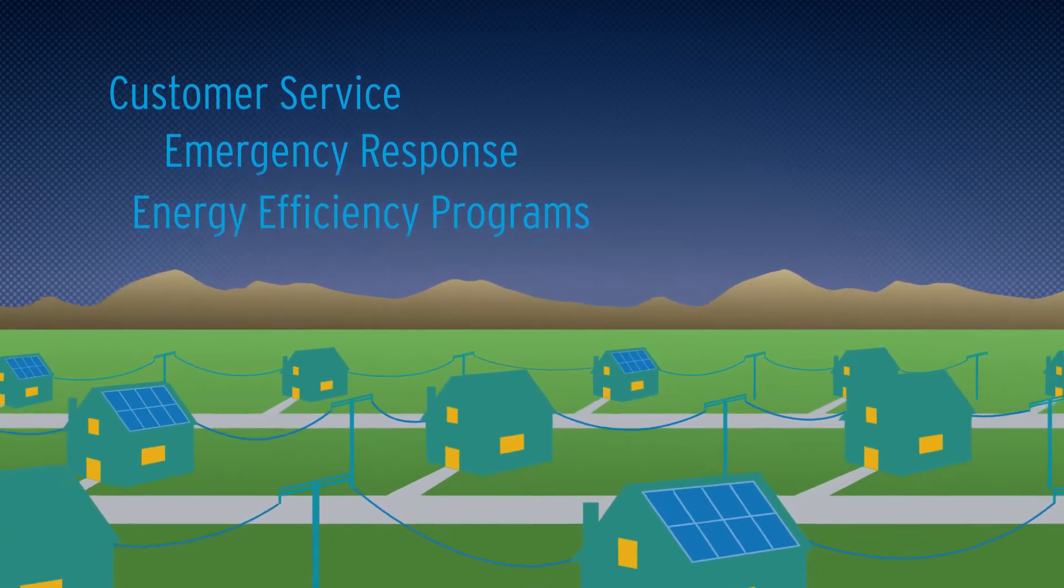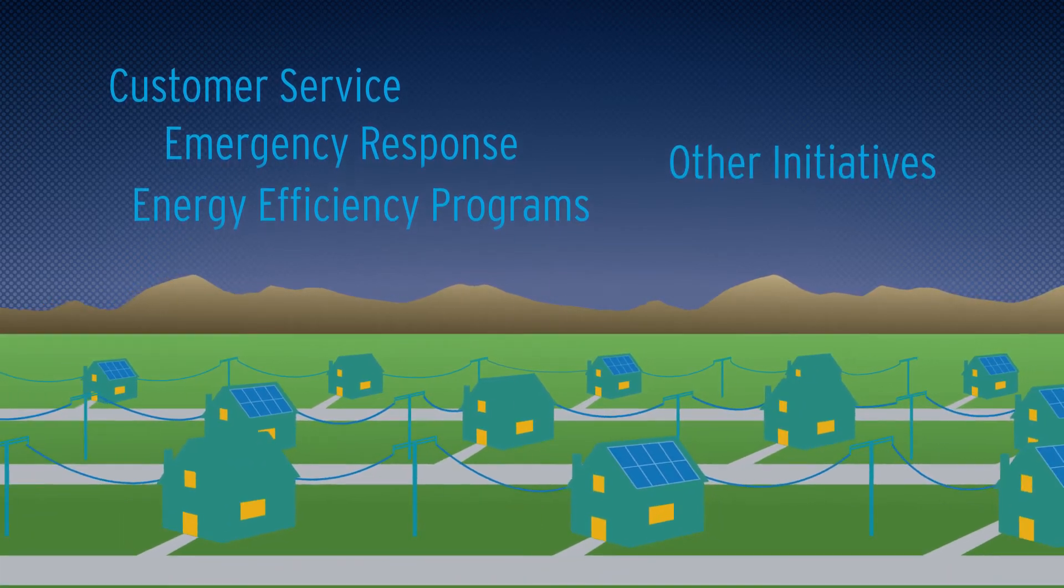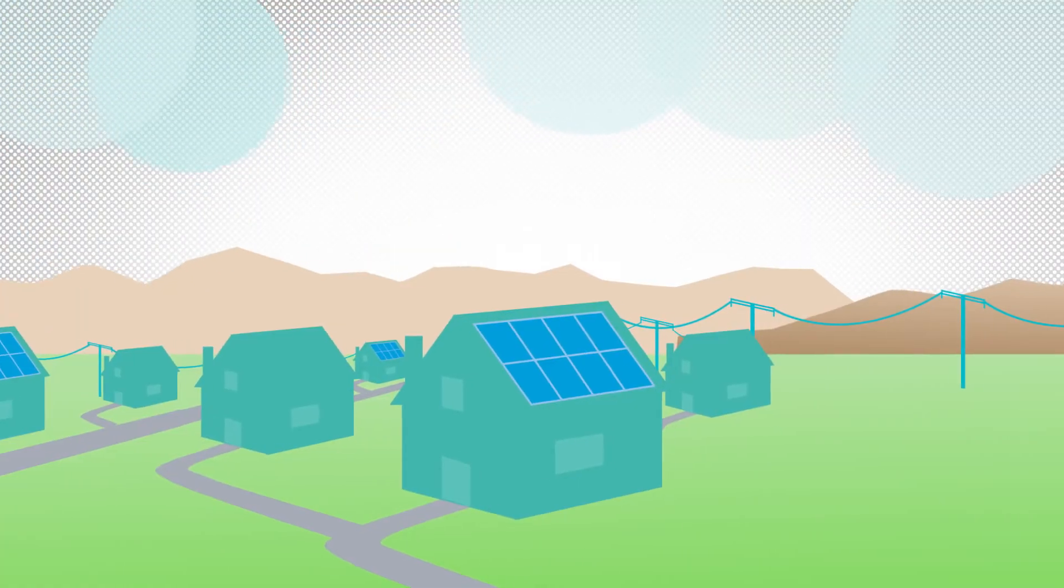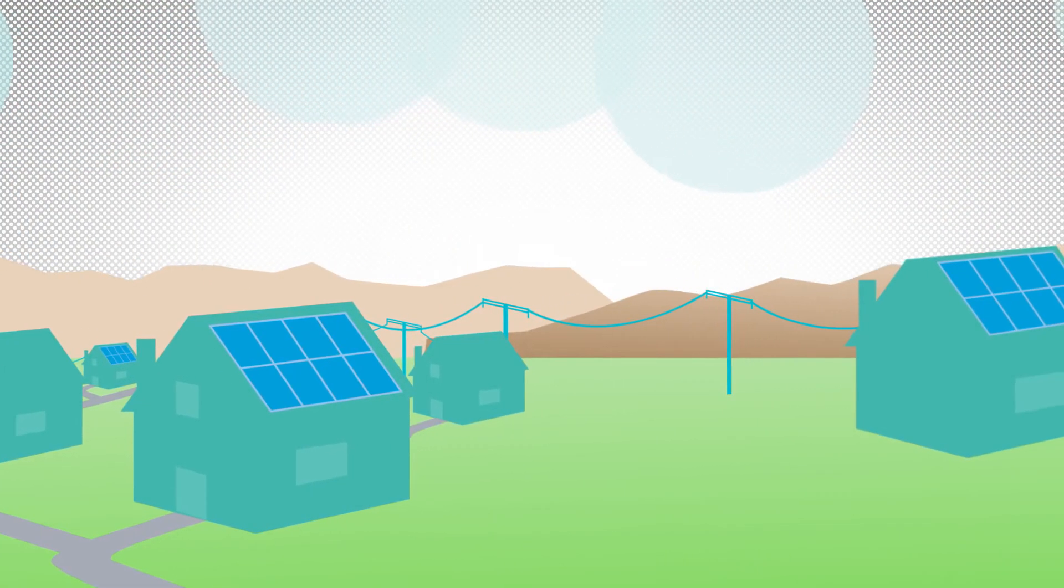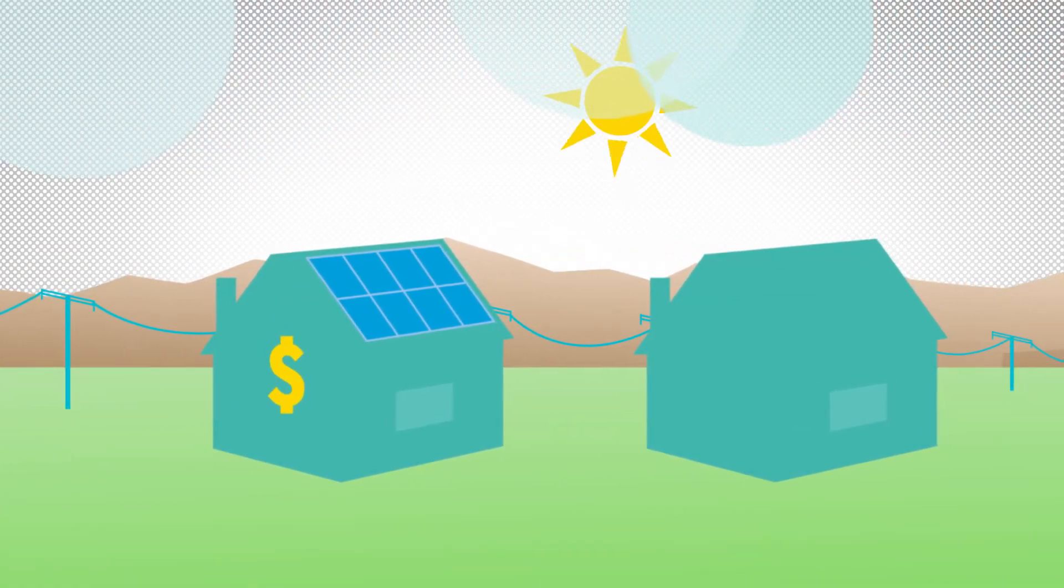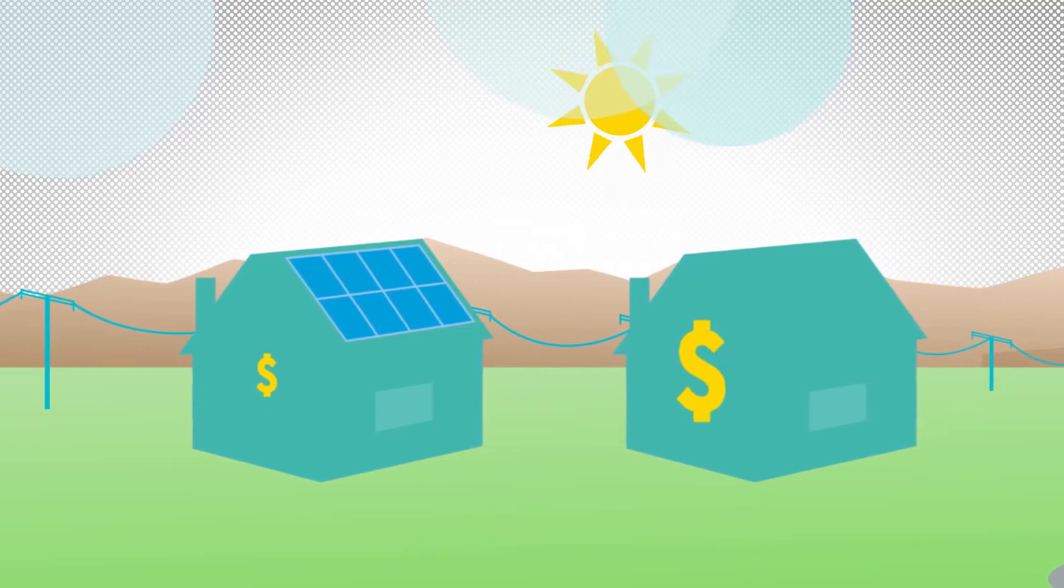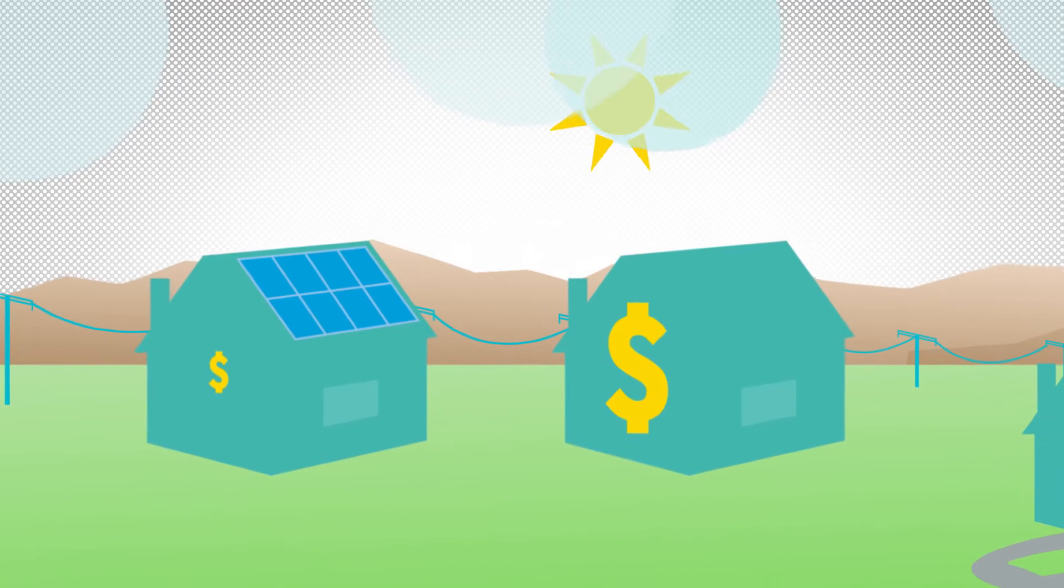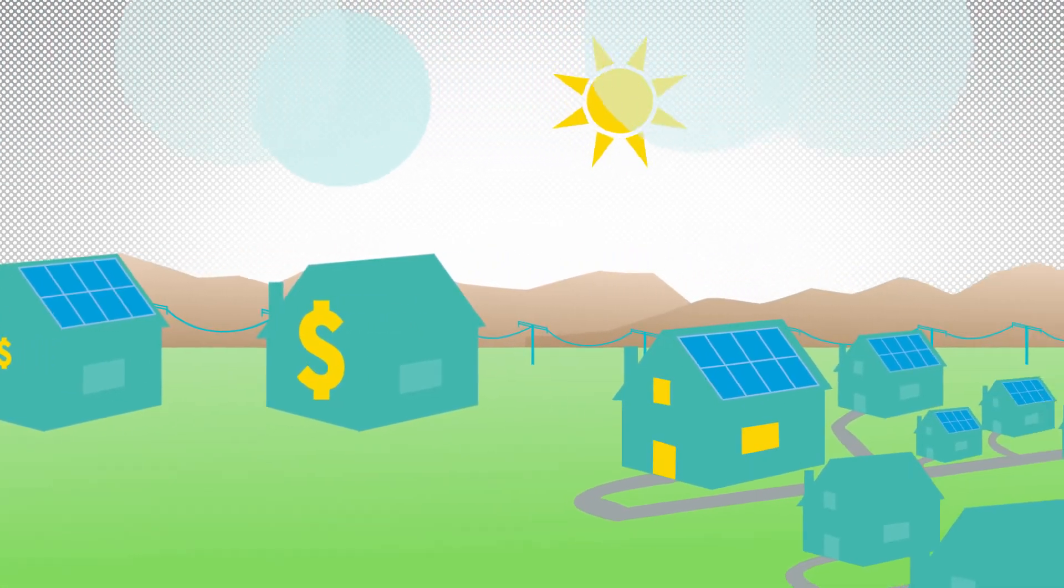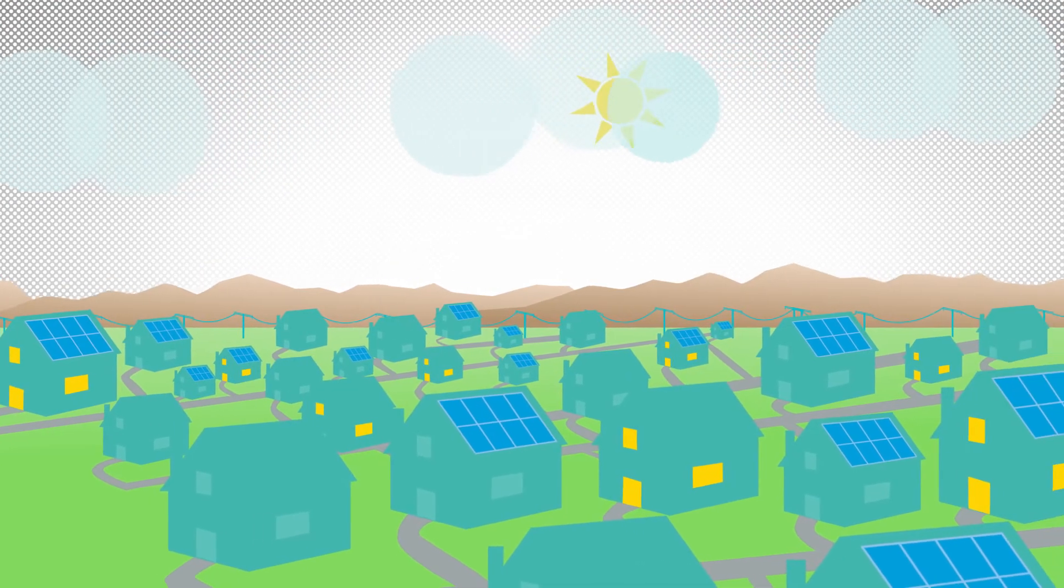Do solar customers pay more for their two-way connection? Right now, the cost of connecting to the grid is built into all electric rates. But since solar customers often purchase less electricity, they end up paying less to use the grid. Customers who don't have solar have to pay more to make up the difference. That's one of the reasons why California is changing the way electric rates are structured, to ensure everyone who uses the grid shares equally in its costs.